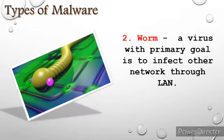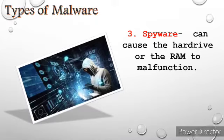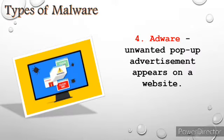Second, a worm is a type of virus with a primary goal to infect and pass through other networks through LAN or the local area network. Third, spyware can cause the hard drive and the random access memory or RAM to malfunction. Unlike worm and computer virus, spyware does not duplicate or replicate itself; however, it is programmed to spy on the personal information of the user, such as documents, videos, and other important data stored in a computer. Fourth, adware is an unwanted pop-up advertisement that appears on a website.